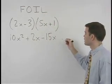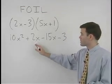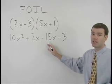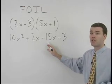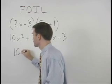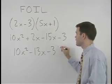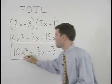Notice that positive 2x minus 15x simplifies to negative 13x. So we have 10x squared minus 13x minus 3 as our final answer.